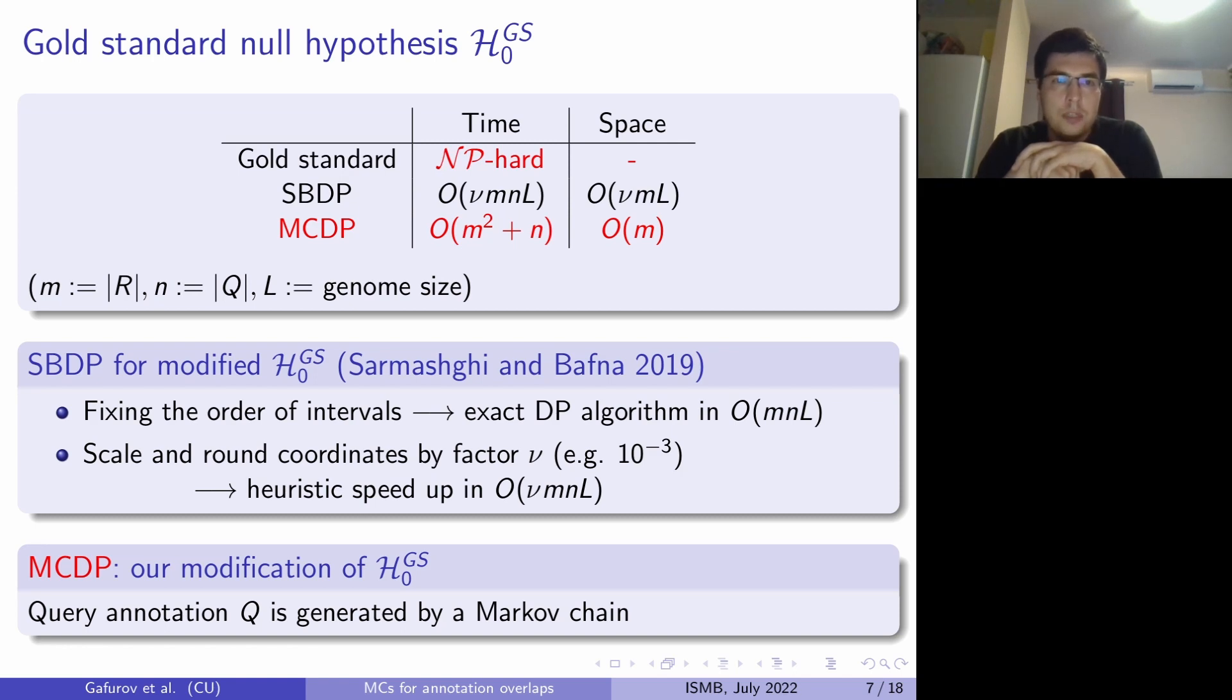So that explains why there are no efficient solutions for that. And at the same time this motivates the modification of the gold standard in order to achieve a feasible algorithm. So one of the attempts was conducted by Sarmashki and Bafna in 2019 where they modified the null hypothesis by restraining the order of intervals so we are no longer able to switch the order of intervals but we are only allowed to play with the gaps. And having that they were able to describe an exact dynamic programming algorithm in O(M, N, L) time where M and N are the sizes of query and reference and L is the genome size.